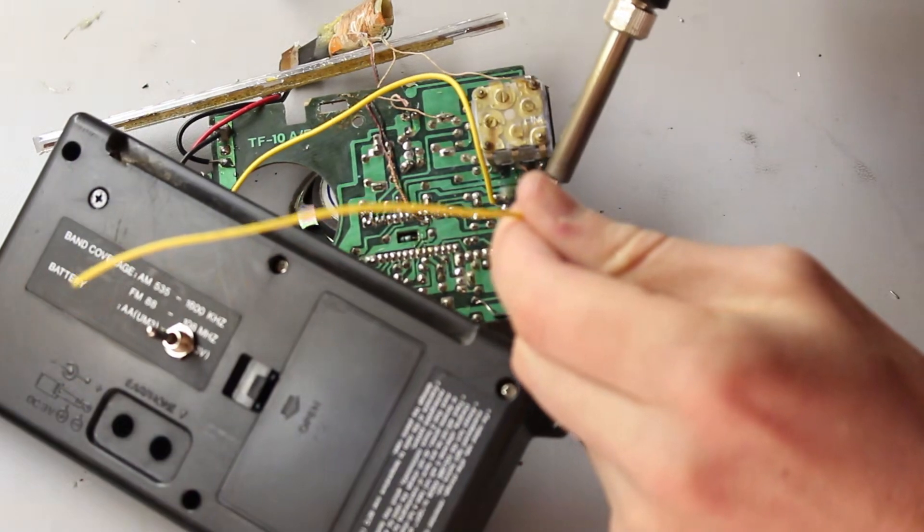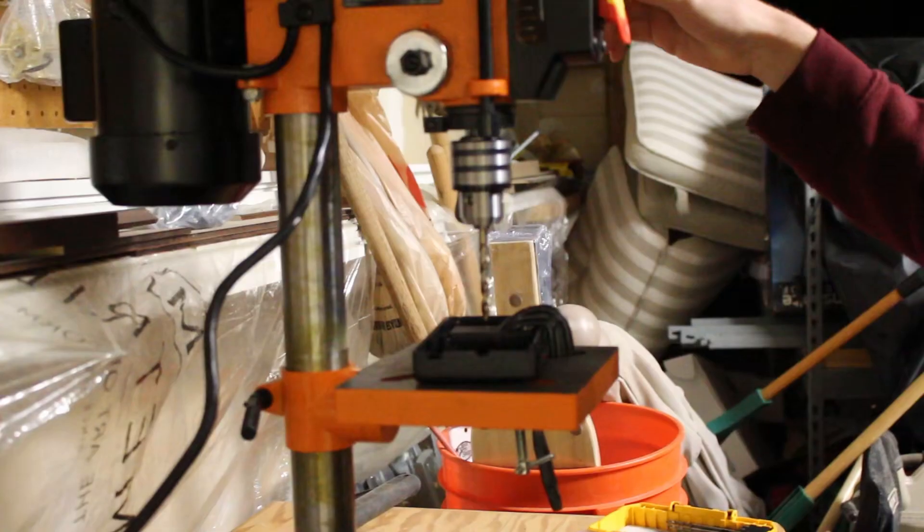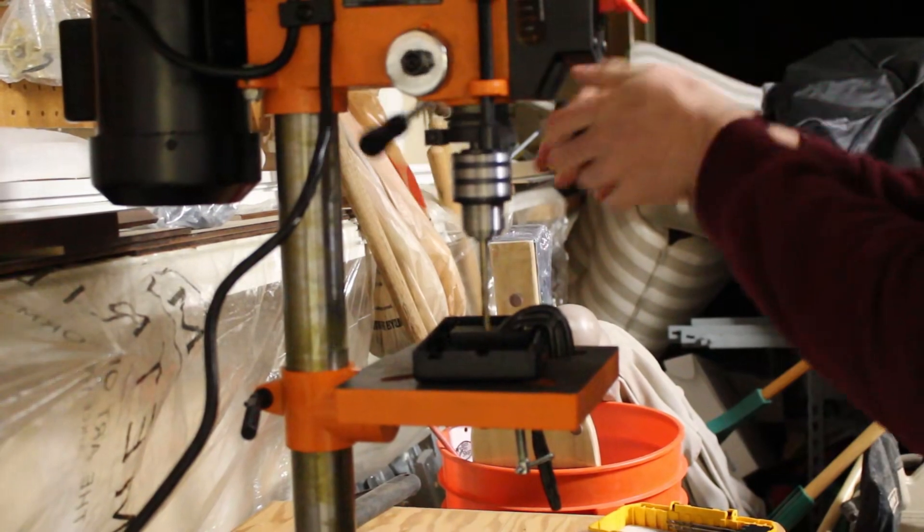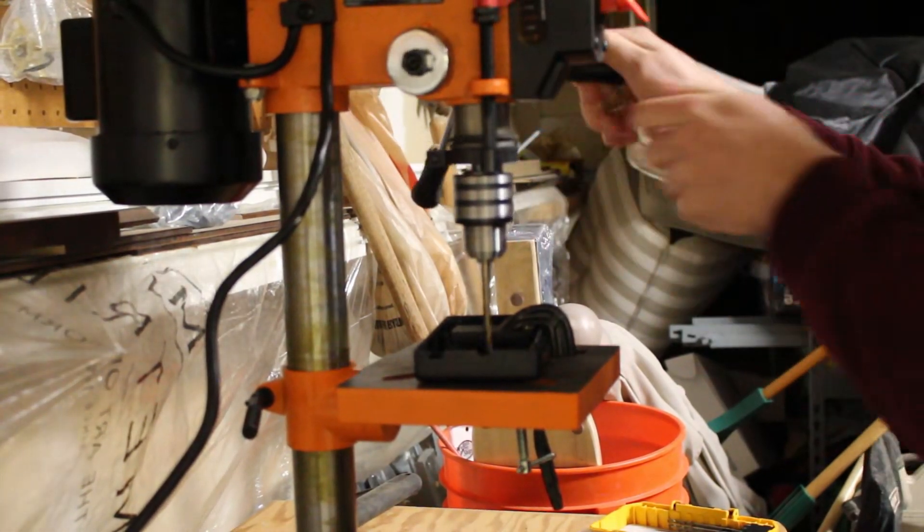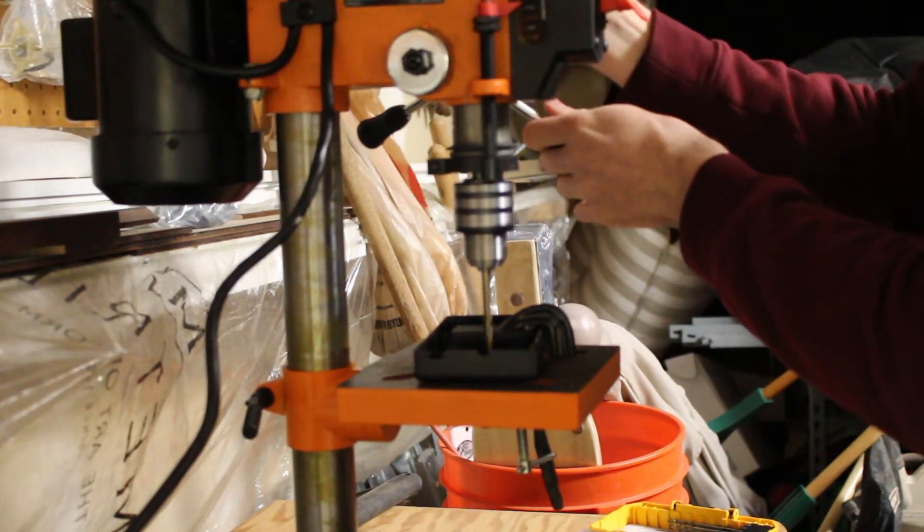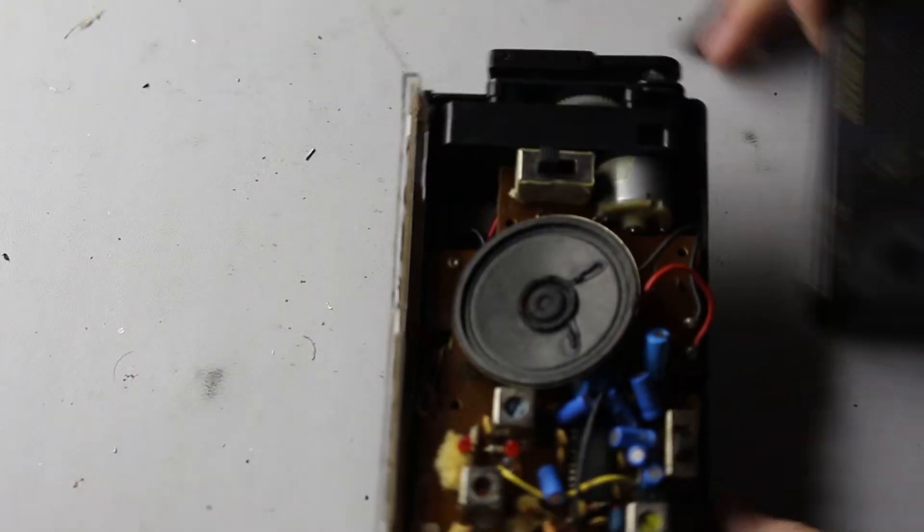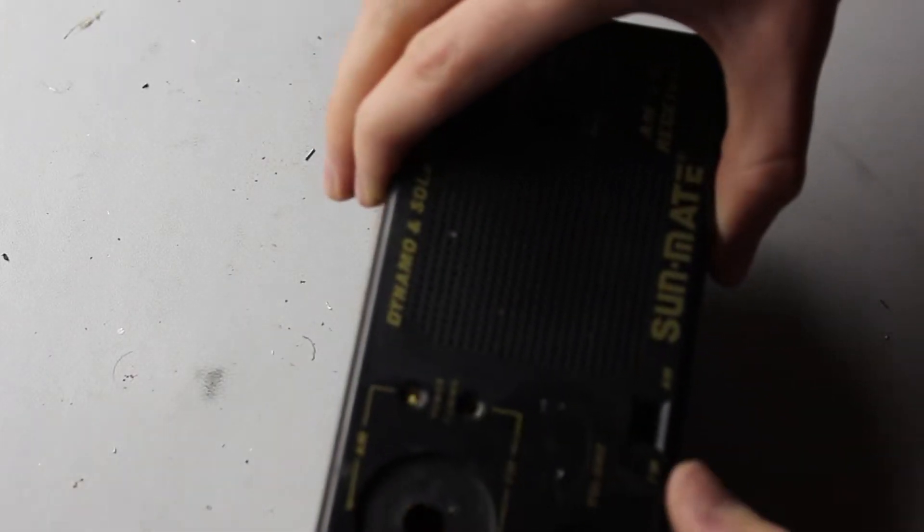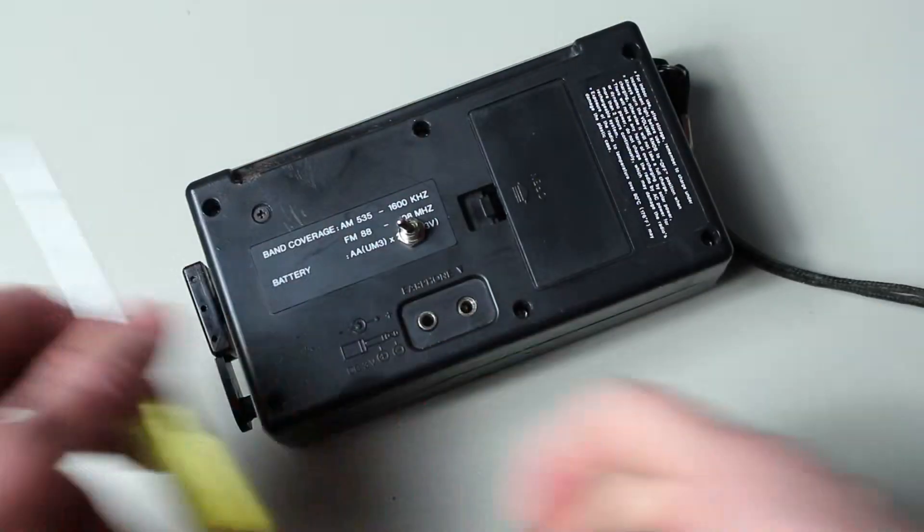And now it is time to reassemble everything. But first, I have to make a spot for this new switch that was added to the radio. To do that, I simply just drilled a hole using a drill press. Now it's actually time to put everything back together. And after doing that, it looks good as new and works just as well. I'm glad to see this radio in proper working order again.